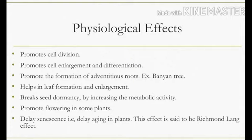Cytokinin helps in leaf formation and also the enlargement of leaves. It breaks seed dormancy by increasing the metabolic activity of the plants. It also promotes flowering in some plants. Then, it delays senescence — senescence means aging in plants — so it is delaying the aging process. This effect is said to be the Richmond-Lang effect.